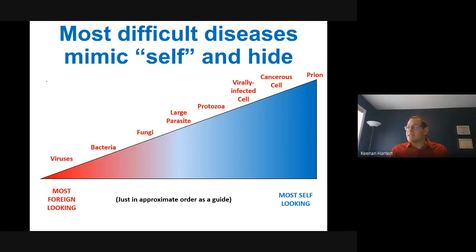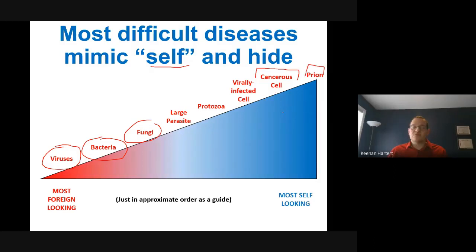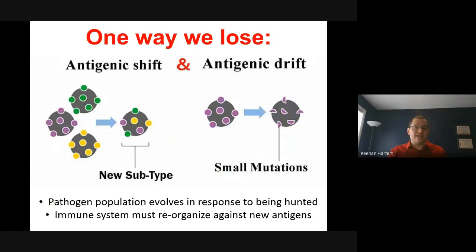This is a scale of diseases based on how much they mimic self. Viruses look the most foreign, next to bacteria — prokaryotes — then fungi, which are eukaryotes but definitely weird-looking. Large parasites. Then it gets harder to find because self-looking things are very hard for your immune system to kill. A cancer cell pretty much just looks like you, so it's really hard for an immune system to target and kill. Prions — you literally can't tell the difference. I have a few more things — mainly the medicine stuff.